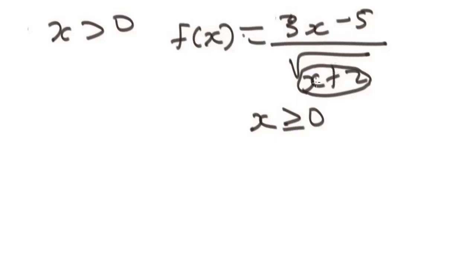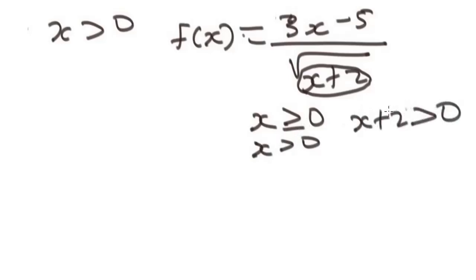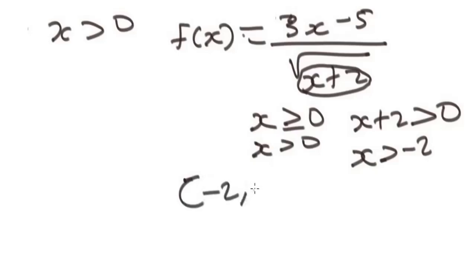So we need x plus 2 strictly greater than zero, which gives x greater than negative 2. The domain of this function is all real numbers greater than negative 2. In interval notation, that is (−2, ∞) — not including negative 2, so we use a parenthesis.